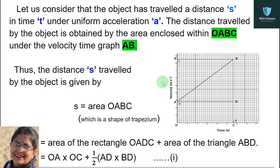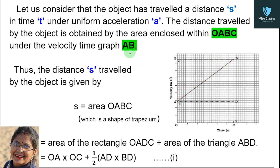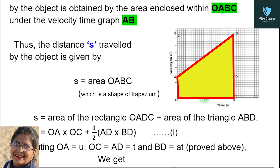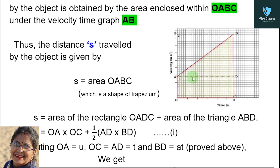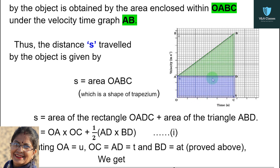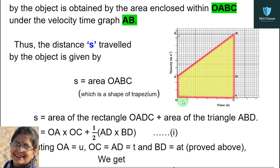As explained in the previous video, the area under a velocity-time graph gives the distance — denoted A-B. So if we want to find distance from this graph, we need to find the area, which is the area O, A, B, C. This shape is a trapezium. To find its area, we can either use the trapezium formula directly, or split it into a rectangle and a triangle.